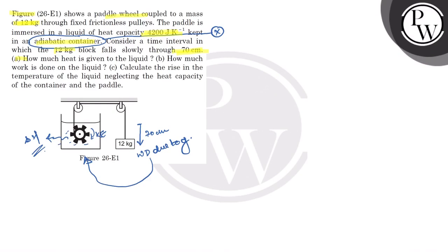How much work is done on the liquid? The work done equals the change in potential energy, which is mgh = 12 × 10 × 0.7. So this is 84 Joule.